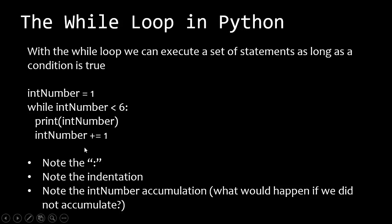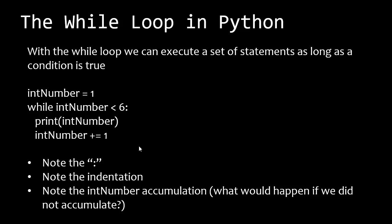Also note that we're incrementing this number — we are changing it so that at some point in time we'll be at or above six and then fall out of the loop. So how this works is it's going to come through, check the condition; if the condition is true — int number is less than six — it will do what is there, come back up, and check the condition again. At some point in time when this becomes false, let's say int number equals six, it will then fall out of the loop completely and go to the next line. I would try this, practice it, look at the results, and understand how this structure actually works.